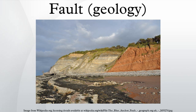Low-angle normal faults with regional tectonic significance may be designated detachment faults. A reverse fault is the opposite of a normal fault — the hanging wall moves up relative to the footwall. Reverse faults indicate compressive shortening of the crust. The dip of a reverse fault is relatively steep, greater than 45 degrees. A thrust fault has the same sense of motion as a reverse fault but with a dip of the fault plane at less than 45 degrees. Thrust faults typically form ramps, flats, and fault-bend folds.